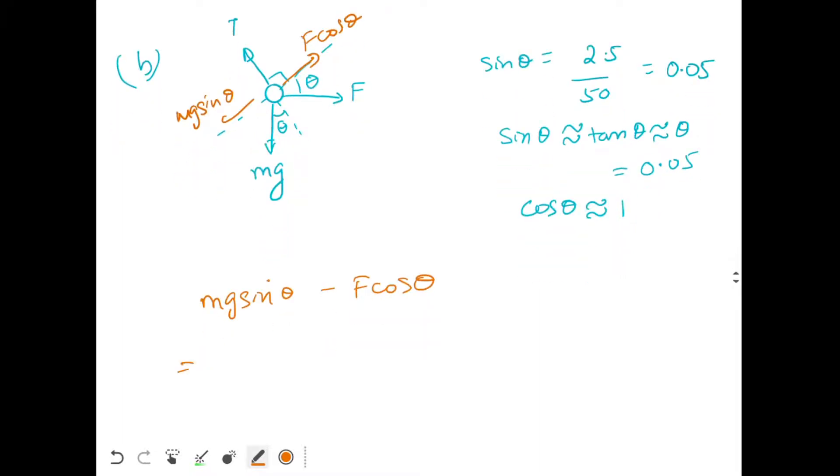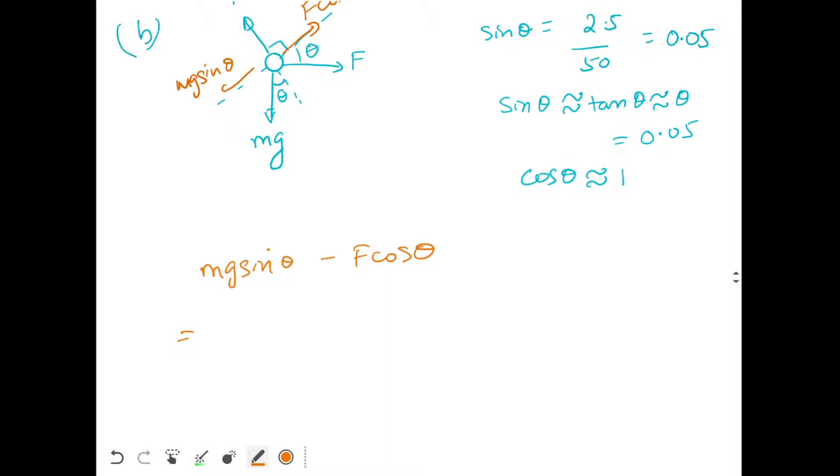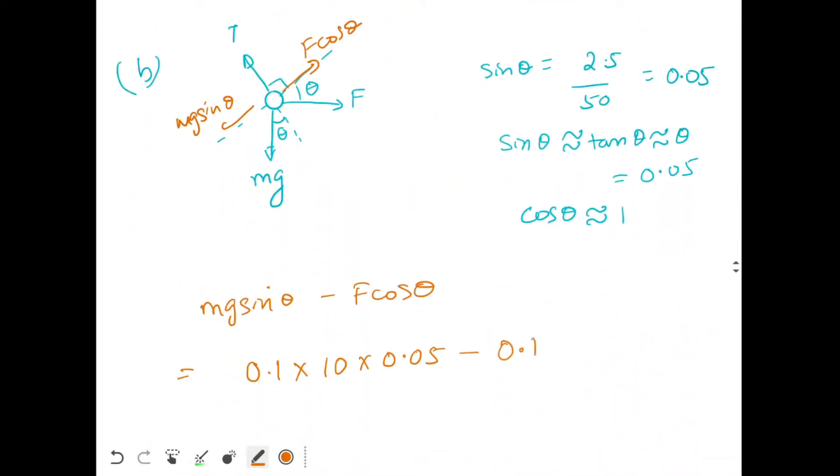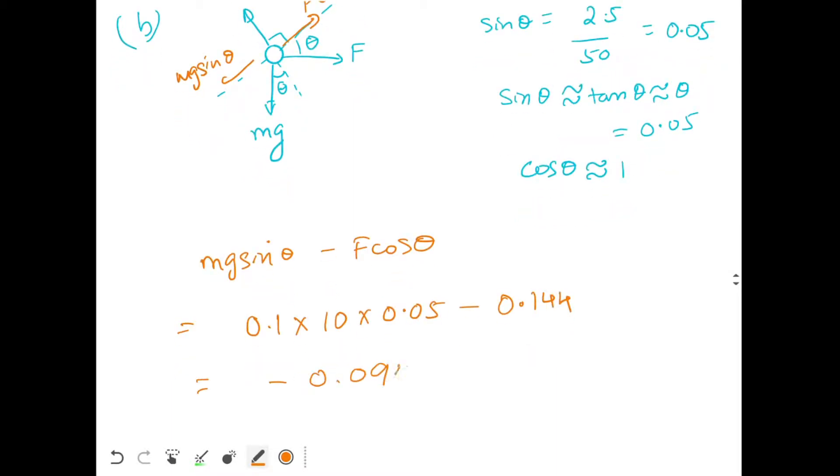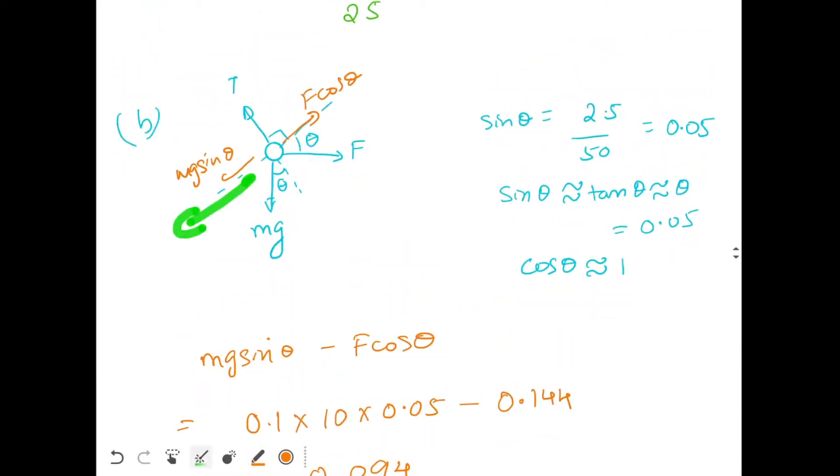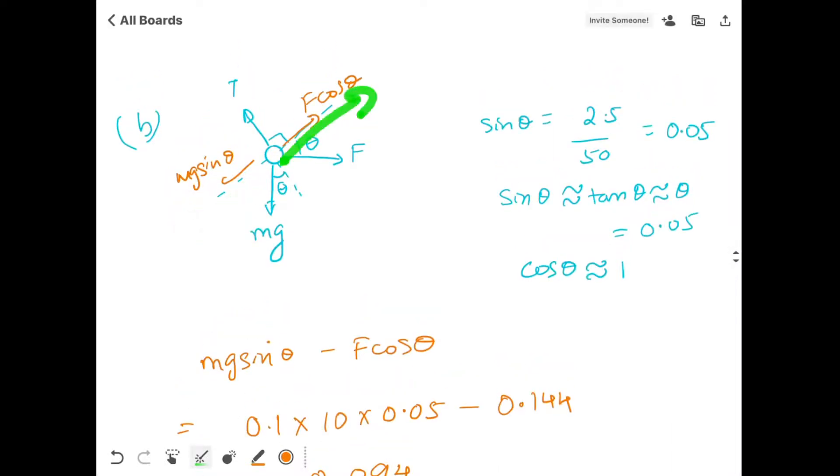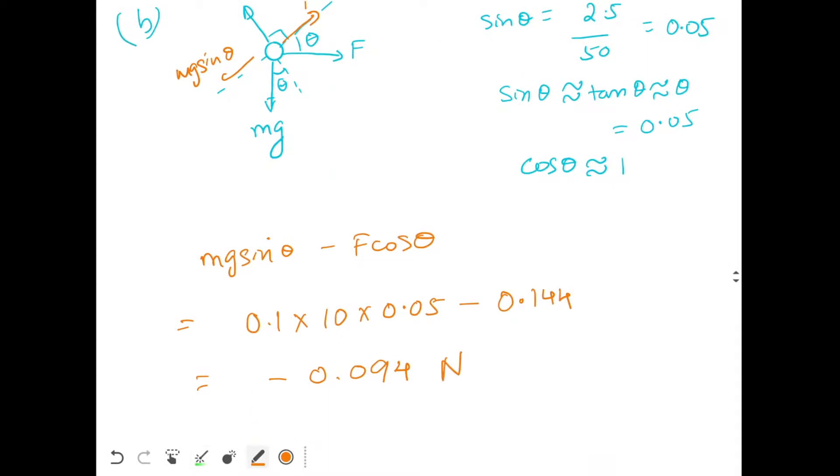This is the net force. So M will be 100 gram, 0.1 kilogram, g equal to 10, sin theta will be 0.05 minus F is 0.144. So we are getting this to be equal to minus 0.094. Why are we getting minus sign? Because I assumed the net force will be in this direction. But since I am getting a minus sign, the net force will be actually in this direction. So the particles will still keep on going away from each other.